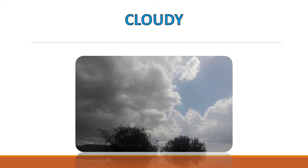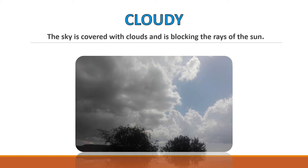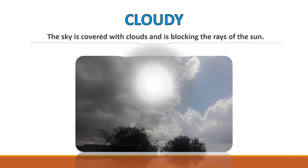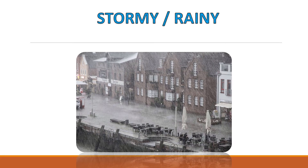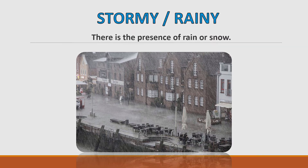When the sky is covered with clouds and is blocking the rays of the sun, it is cloudy. When there is a presence of rain or snow, it is stormy or rainy.